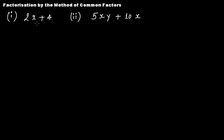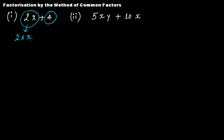This is factorization by the method of common factors. The first algebraic expression is 2x + 4, which has two terms: 2x and 4. Let's break each term down into its irreducible factor form. 2x is 2 multiplied by x — you cannot break it down further since 2 is a prime number and x is a variable. The term 4 is 2 multiplied by 2.